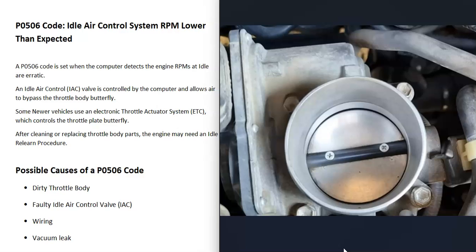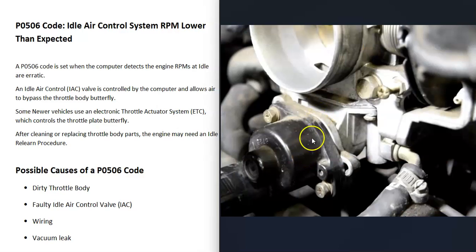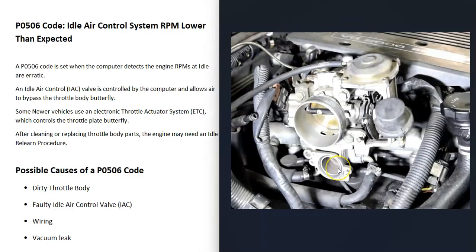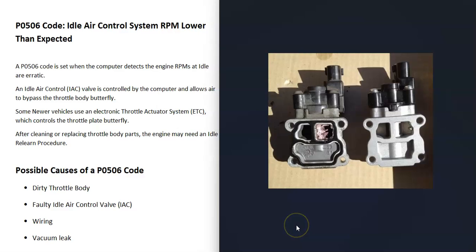The idle air control valve can also get dirty and clogged up, and the ports going to it can get clogged as well. It can be removed, cleaned up, and put back in — quite often that's all it needs. Just get all the dirt, grime, and buildup out of it. Of course, it's also possible that the idle air control valve has failed and just needs to be replaced.